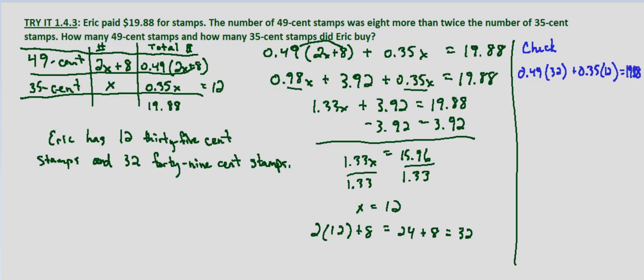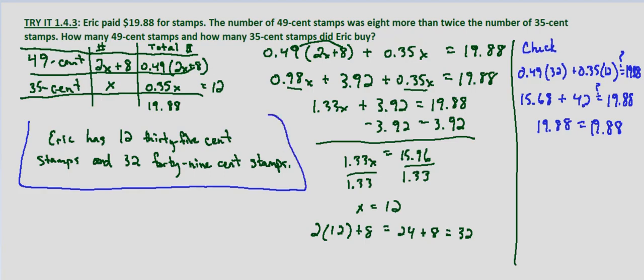So 0.49 times 32 is 15.68. 0.35 times 12 is 4.2, and we want to know does that equal $19.88. 15.68 plus 4.2 does equal 19.88, verifying that Eric bought 12 35-cent stamps and 32 49-cent stamps.